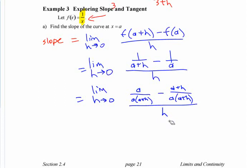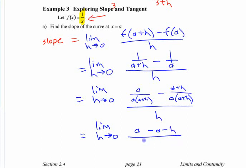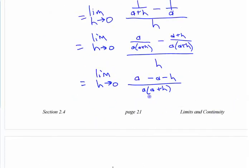If you'd rather, some people sometimes, instead of saying divided by H, they do this, they put that and they say times 1 over H, if that's easier for you to keep track of. It's entirely up to you. And then if you're trying to simplify this, what do we have on the top there? We have A minus A minus H over that denominator there, A, A plus H, the whole thing over H.